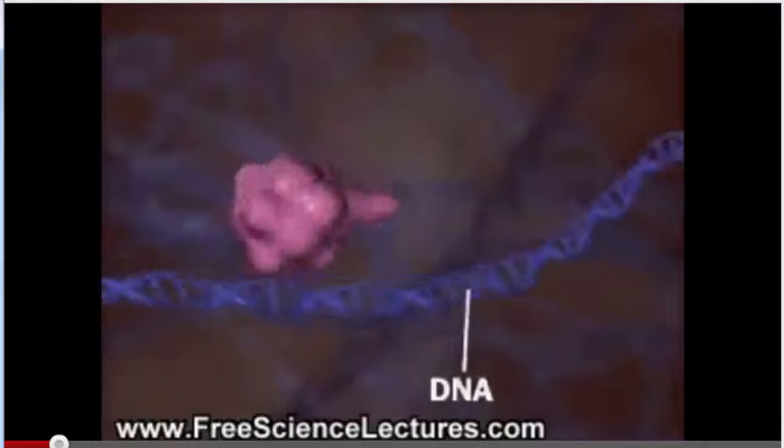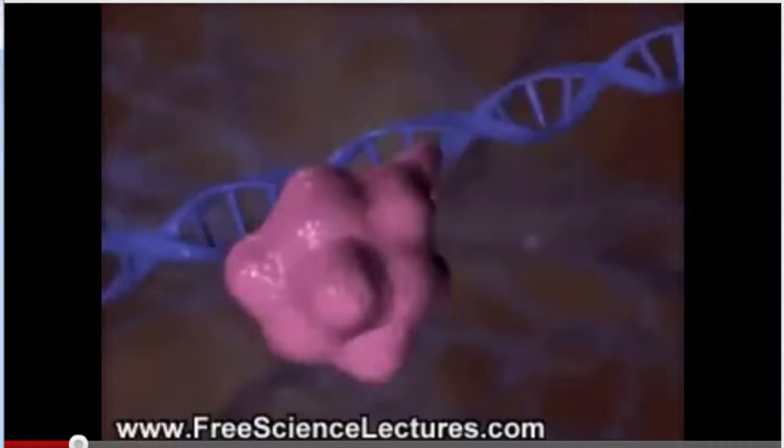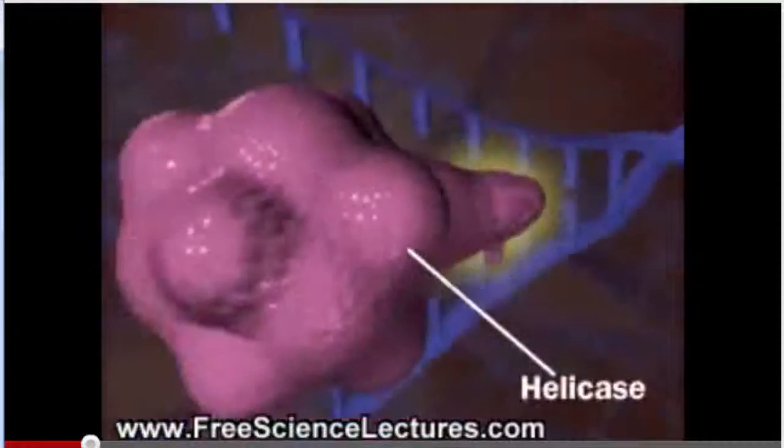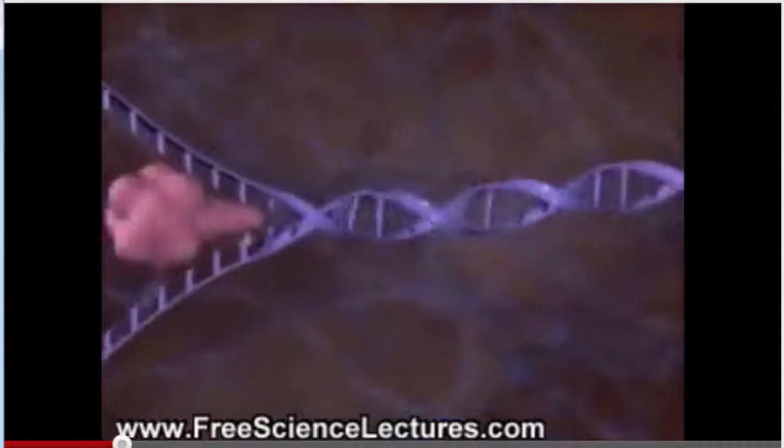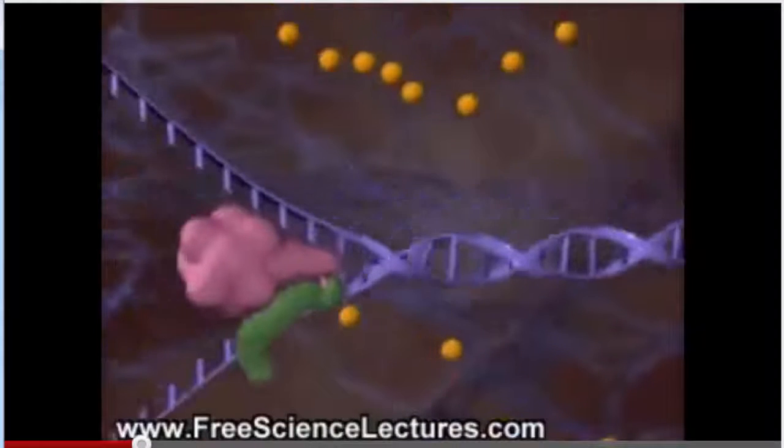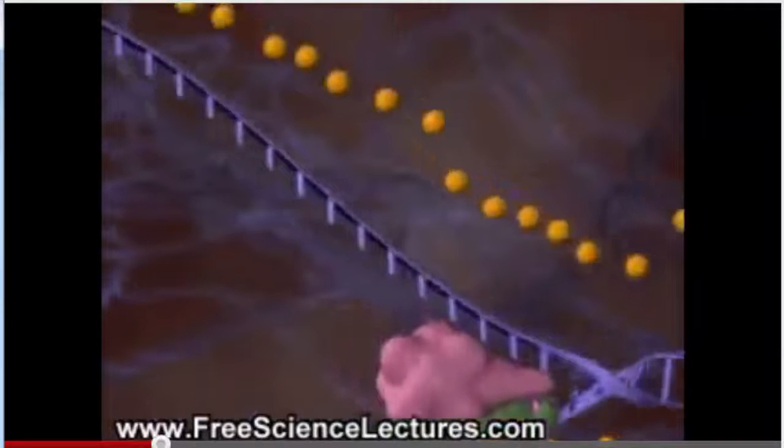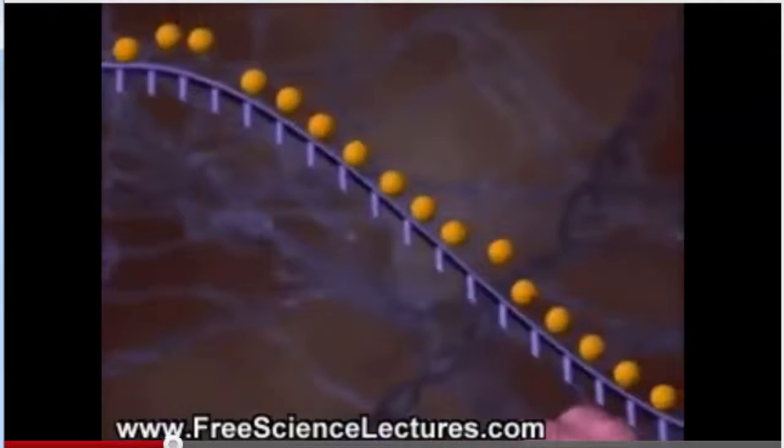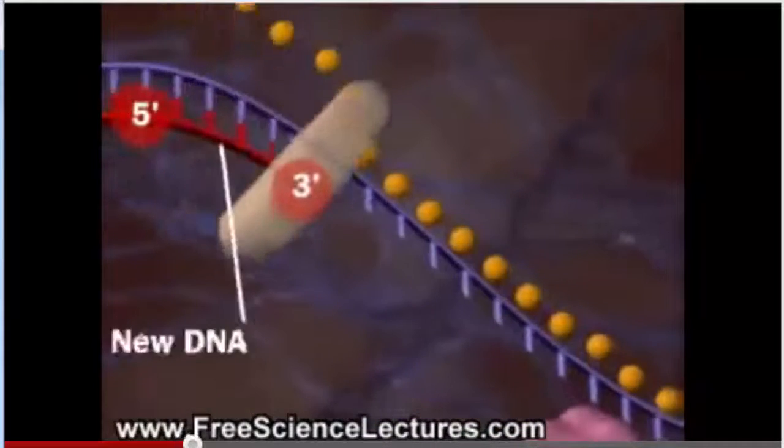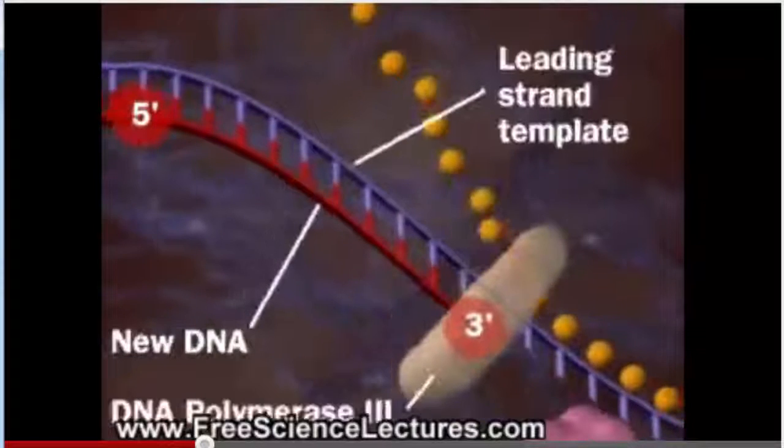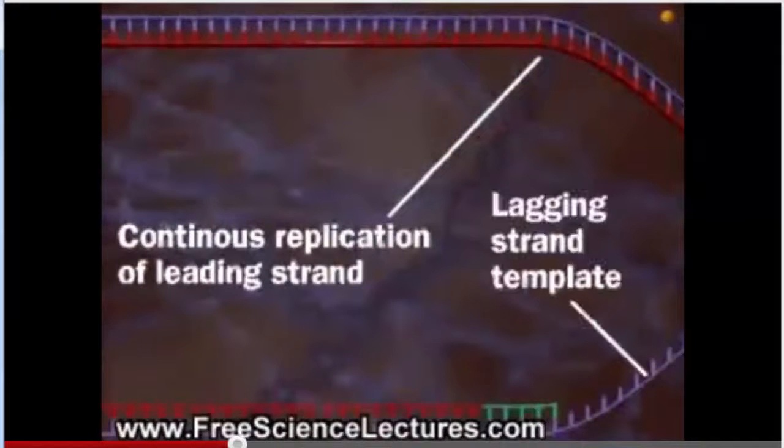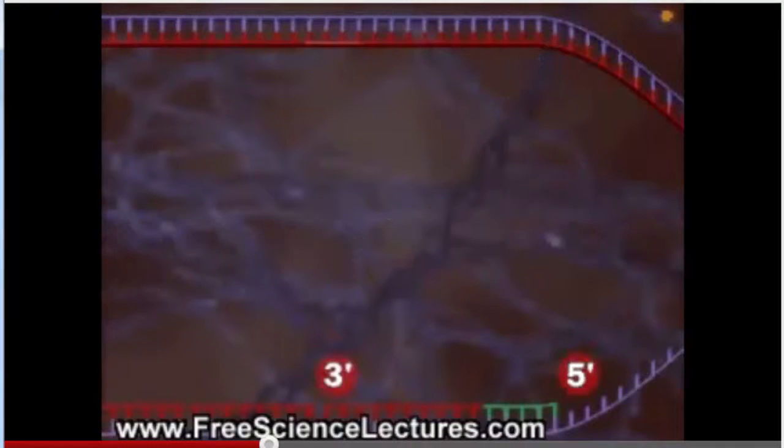When DNA replicates, its strands are separated by the enzyme helicase. Single-stranded DNA binding proteins keep the strands from re-annealing. One DNA strand encodes the leading strand, which forms from its 5' to its 3' end, using DNA polymerase 3. No problem here, but the lagging strand presents problems. It has to form from 5' to 3' too. It forms in pieces called Okazaki fragments.